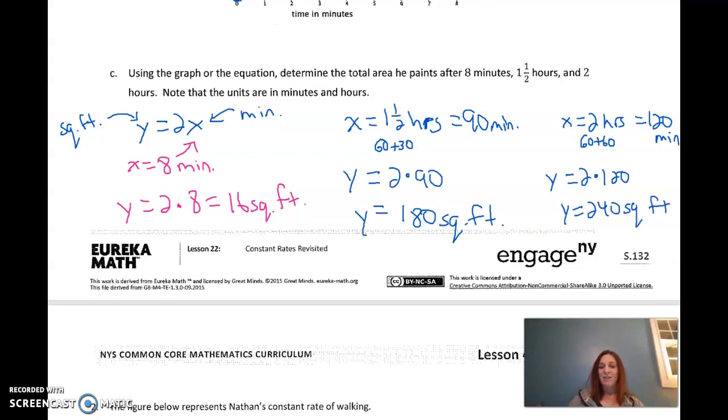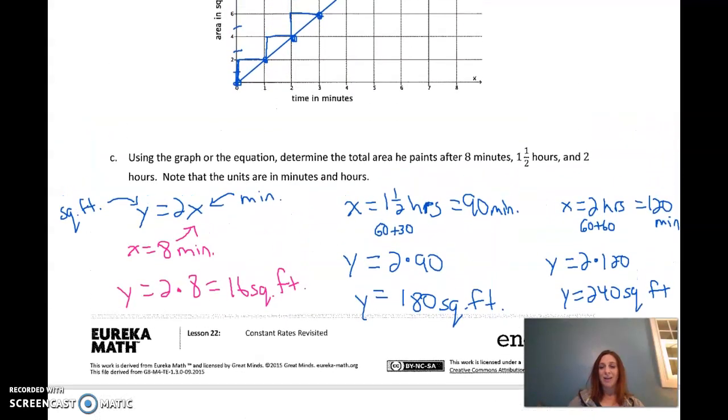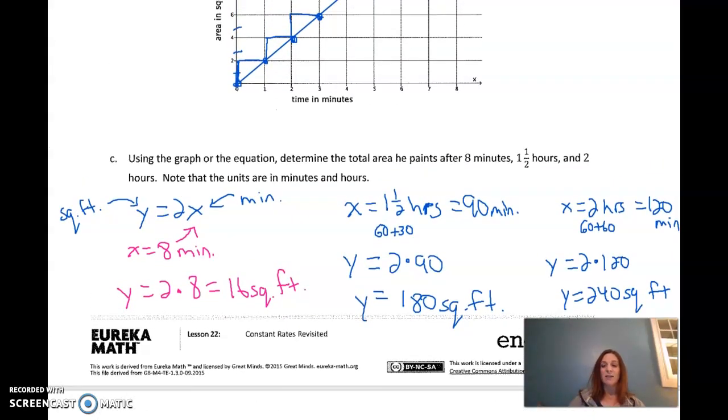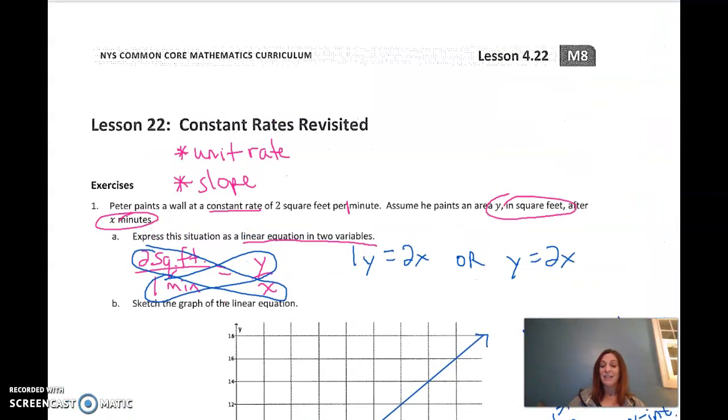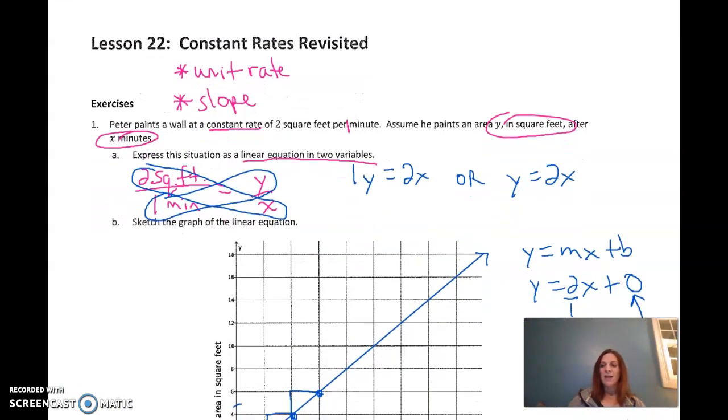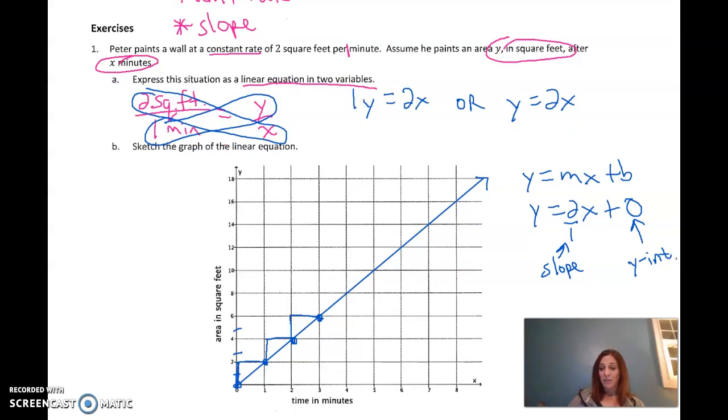So as we kick off Lesson 22 here about constant rates revisited, don't overthink what we're doing. We have spent a lot of time in the past couple years working on the idea of being constant, of having the unit rate. And lately, we've been really focusing on graphing these and the different ways to graph them. This line represents all the pairings of minutes and square feet that go together. This equation represents that as well. So there's a lot of different ways we can represent the same information.